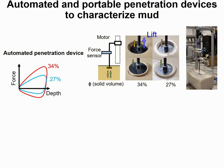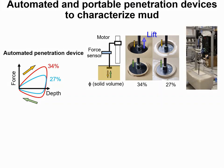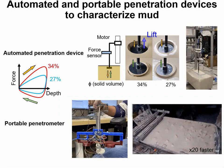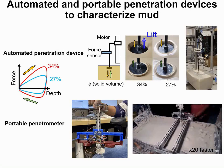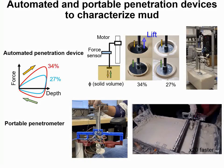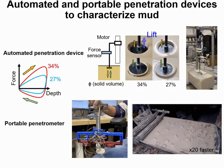We then built an automated penetration device to characterize mud by measuring force with respect to depth across different volume fractions. The slope increases as the volume fraction increases. As the intruder goes in, the lift force increases with depth due to hydrostatic-like pressure, and as the intruder is removed from the mud, the mud sticks to the bottom causing a large downward suction force in the opposite direction. This characterization also helped us decide which volume fractions to use for our experiments. Since the fish disturbs the mud and we need to mix and flatten it at the start of each trial, we also built a portable version of the automated penetration device to characterize mud strength during experiments, as commercial penetrometers are not sensitive enough, especially for weaker mud.